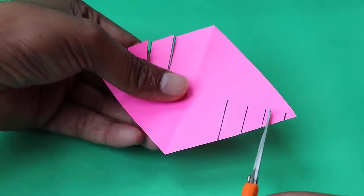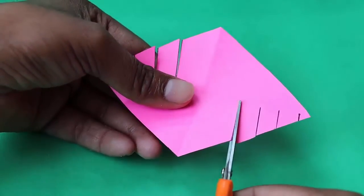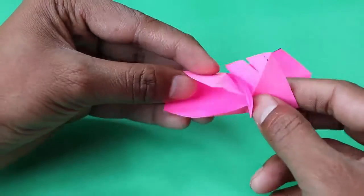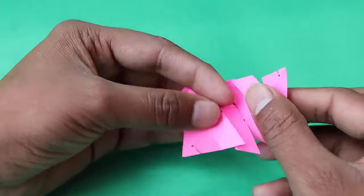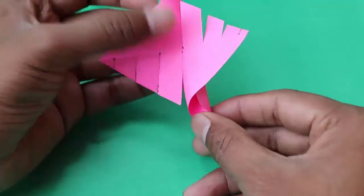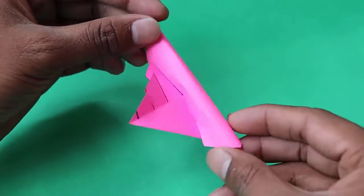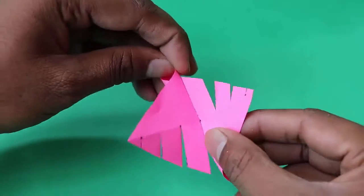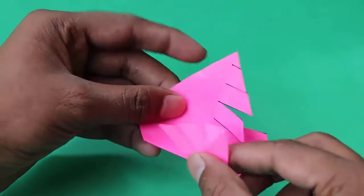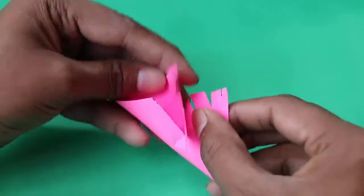Then twist and interlock the two biggest slits to make a cylindrical tube. Here you can see the model from all its angles. See the interlocking action once again: twist and interlock the two biggest slits to make a cylindrical tube.